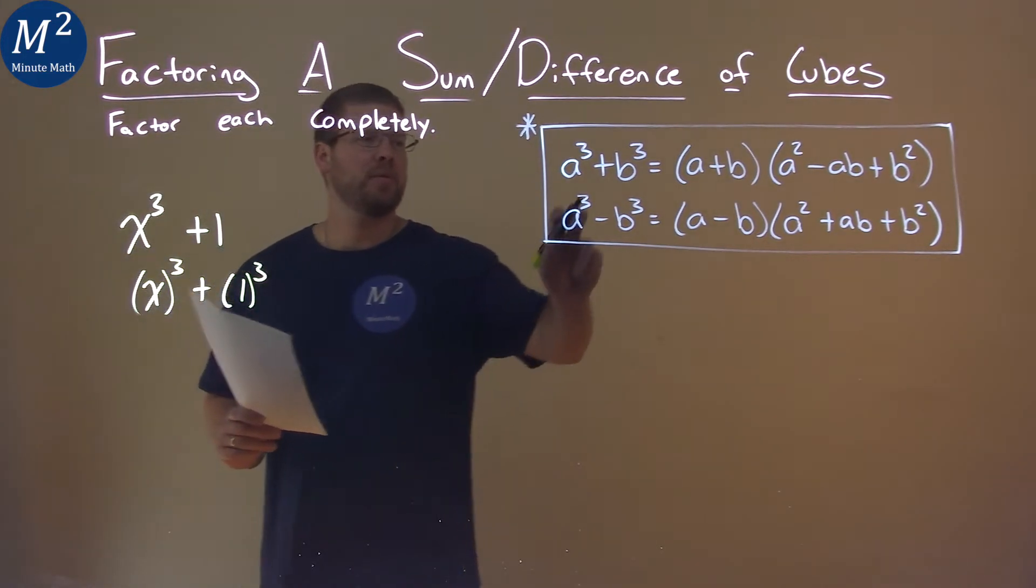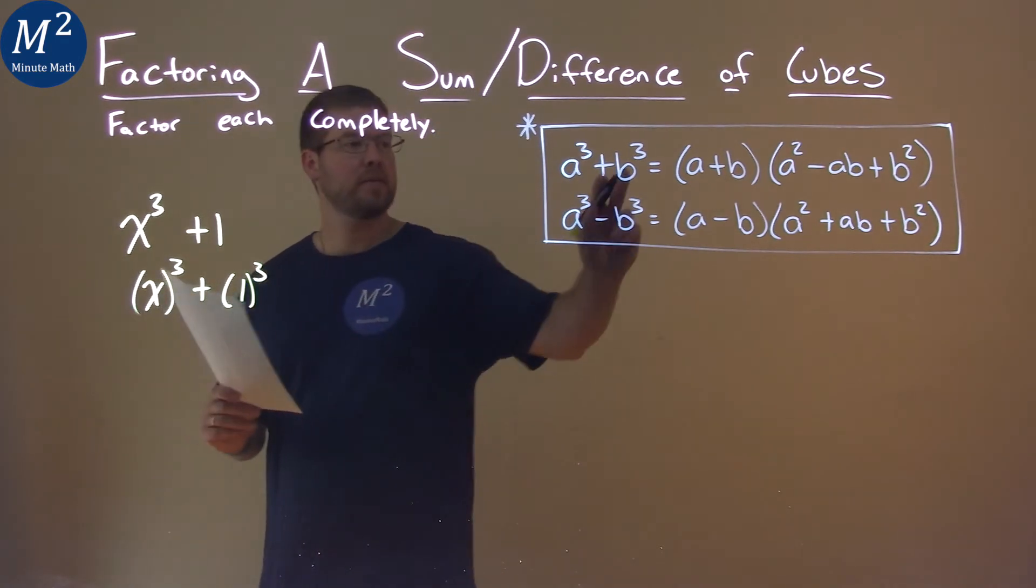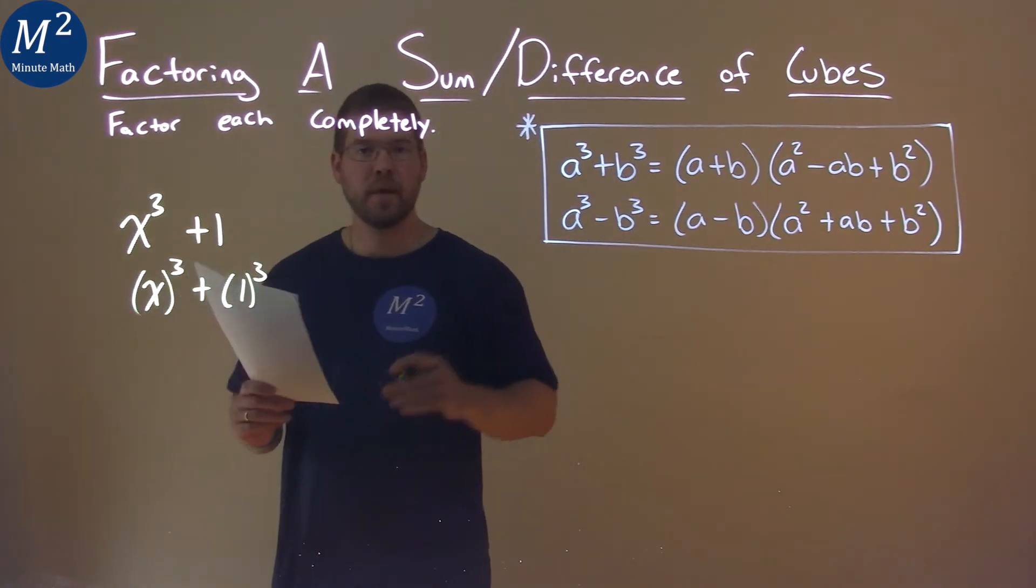We now have it lined up like our sum of cubes formula. Our a value is x and our b value is one. So let's use the formula.